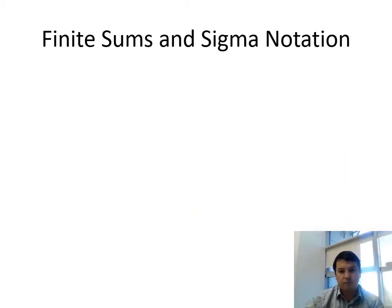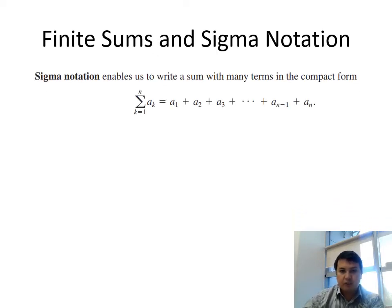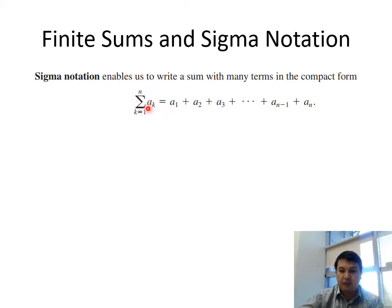So what is sigma notation? Sigma notation is a compact way of writing a sum. If we have a finite sum a1 plus a2, and so on up to a_n, we can simply write it in sigma notation as the sum from k equals 1 to n of a sub k.